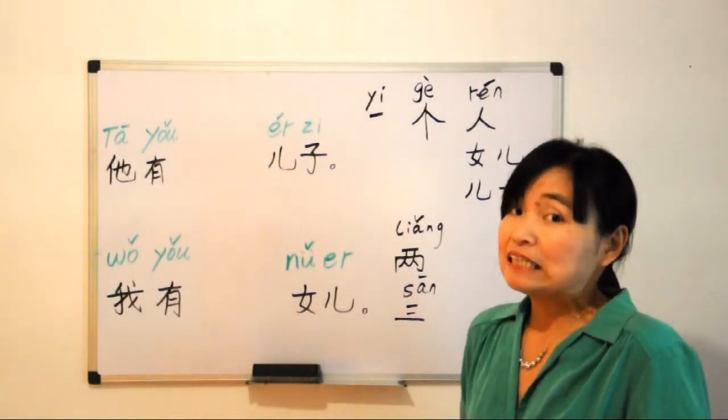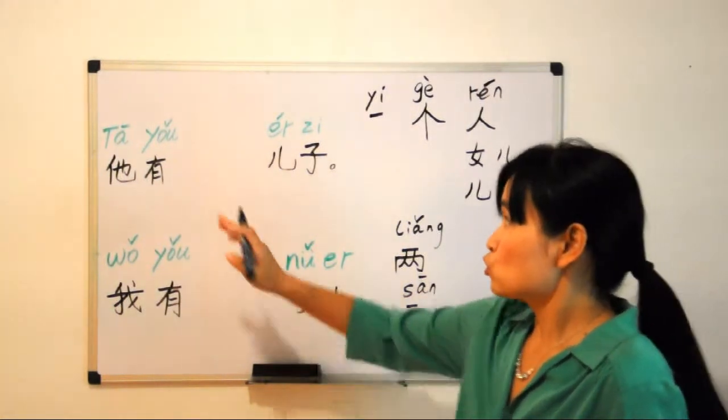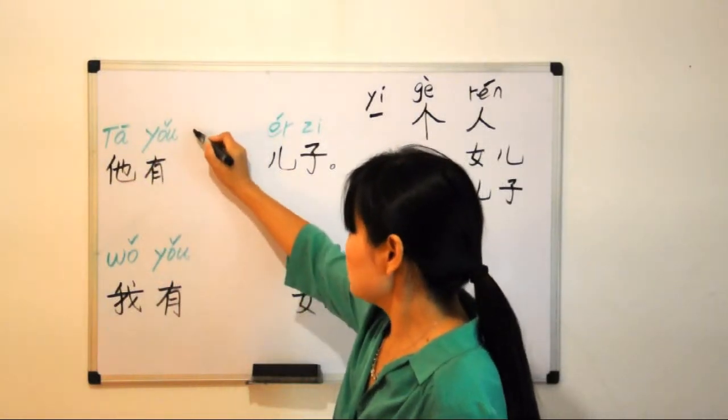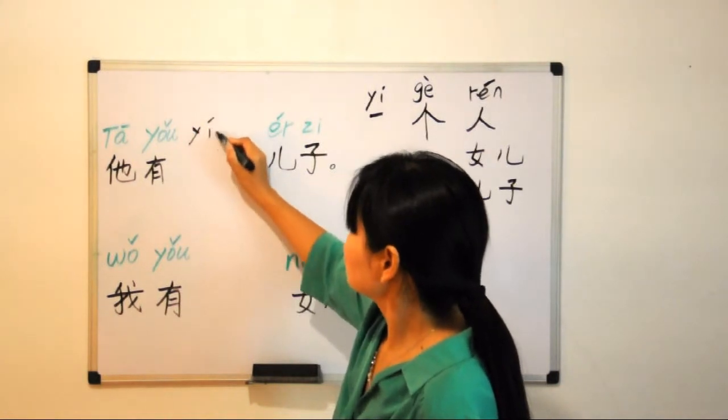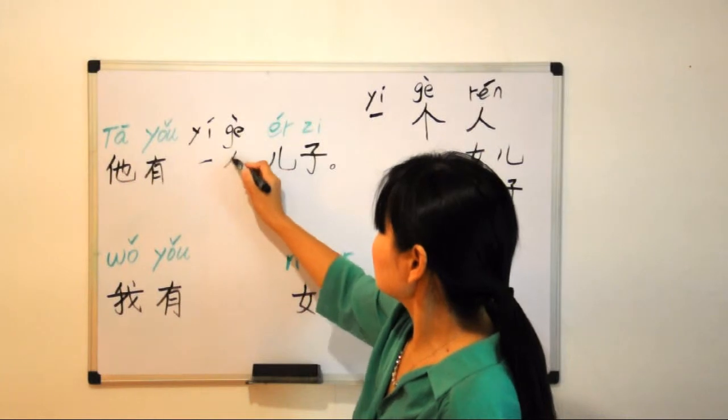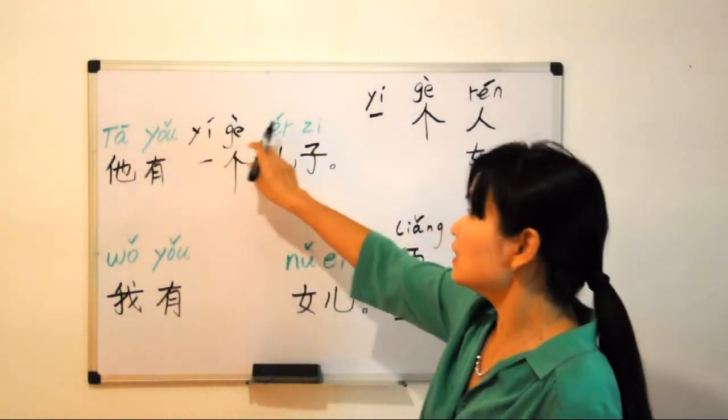So how to say 'he has one son'? He is 他 (tā), right? So how to say he has one son? 一个, 一个儿子. 他有一个儿子 (Tā yǒu yí gè érzi).